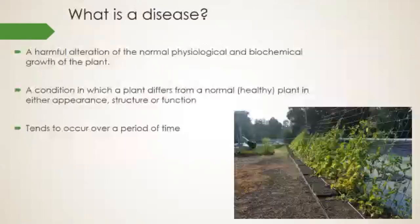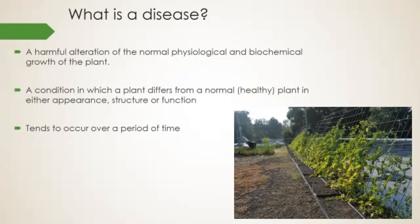So let's talk about what a disease is. A plant disease is an abnormality in the physiology or morphology of a plant — mainly the physiology. It's a harmful alteration of the normal function, biology, and growth of a plant — something is going wrong. A disease is a condition in which a plant differs from its normal healthy behavior, whether in appearance, structure, or function. Diseases tend to occur over an extended period of time; they're not something that happens all at once.